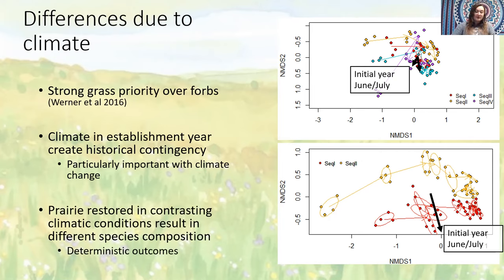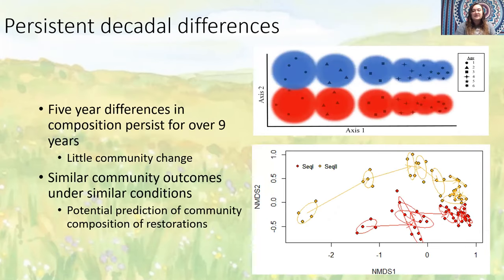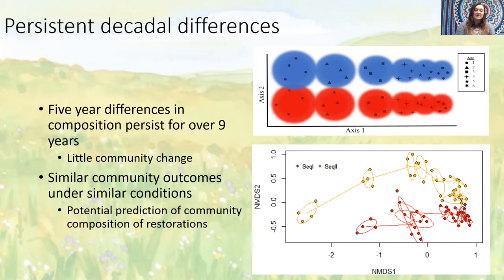Inter-annual variability in climate is a stochastic event, but it looks like it has deterministic outcomes. Differences between sequences restored under different climatic conditions suggest deterministic processes influence community assembly. Those initial differences in composition persist for a decade, with little change in composition indicating that those communities could persist for much longer. There has been limited exploration of how inter-annual variability in climate affects restoration outcomes, and it's often categorized as stochastic noise rather than a significant driver of community change. Separation of community composition due to climatic conditions could lead to the prediction of final communities of restorations.